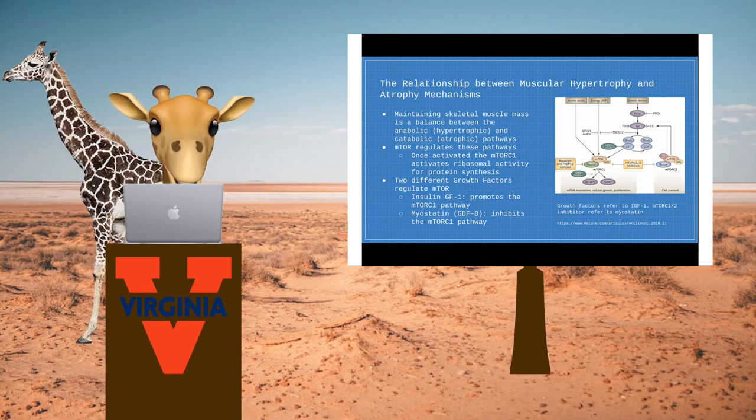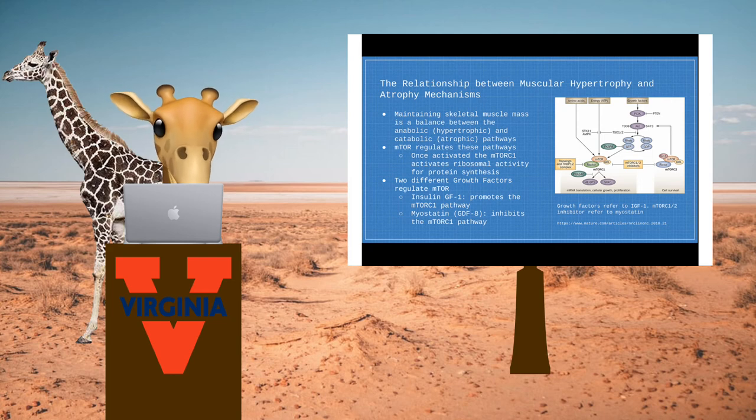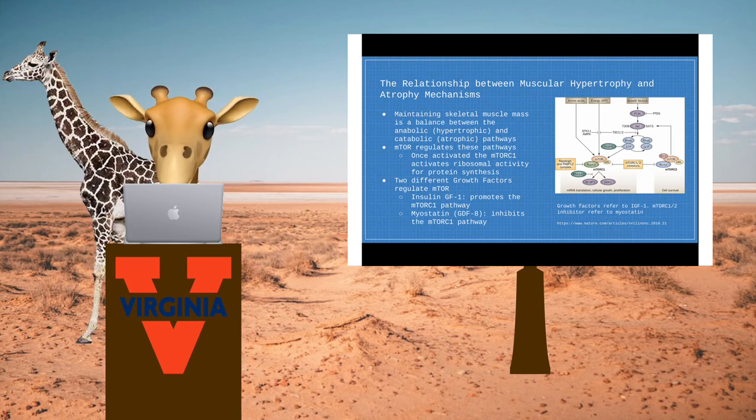IGF-1 promotes muscle hypertrophy by initiating the mTOR pathways for protein synthesis, and myostatin inhibits it by regulating the number of muscle fibers that can be made during development.